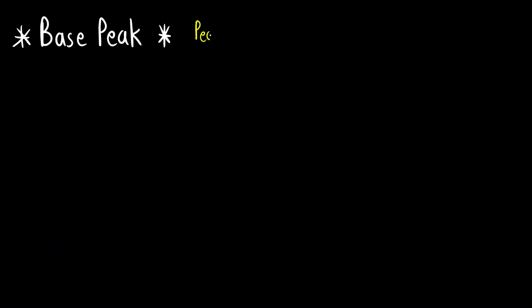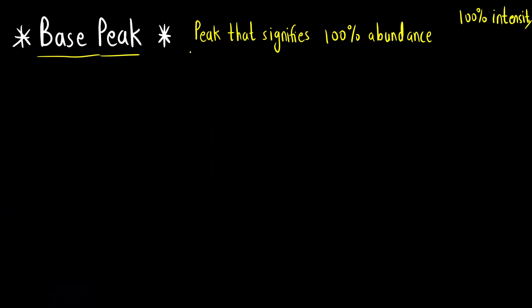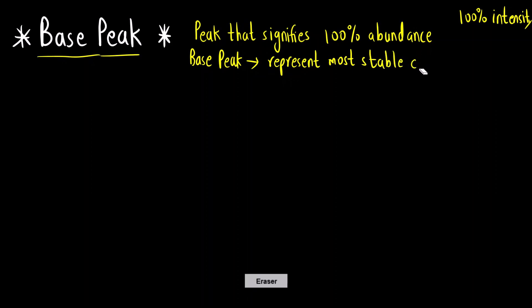Now let us understand what is a base peak. The base peak is the peak that signifies 100% abundance — it is the peak with 100% intensity. The base peak represents the most stable fragment, which is the most stable carbocation. So the base peak represents the most stable carbocation.